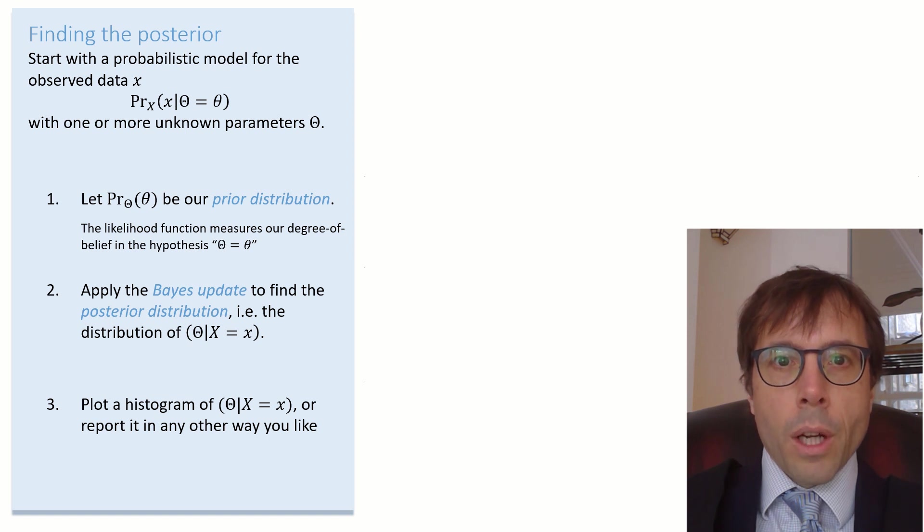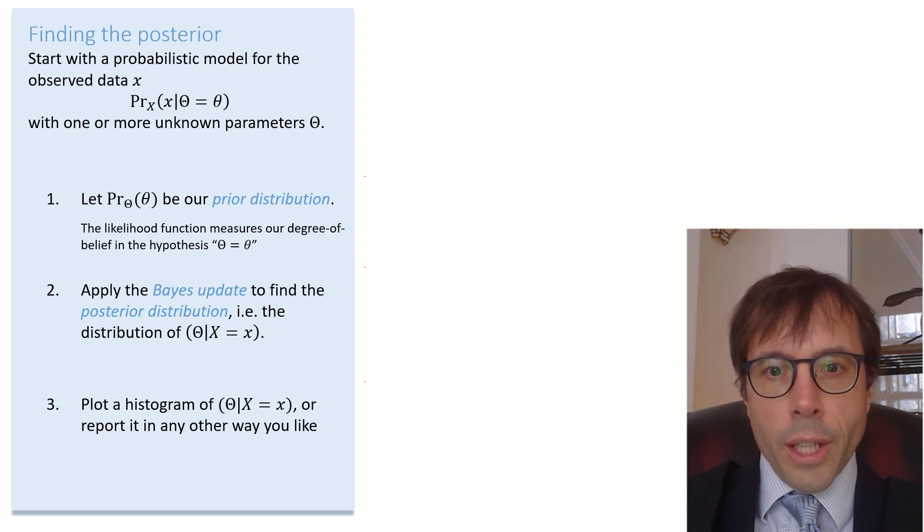Step one, we have to declare our prior distribution for theta. We can set it out as a likelihood function, the likelihood for big theta of value little theta. This measures our degree of belief in the hypothesis that the unknown parameter's value is actually equal to little theta.